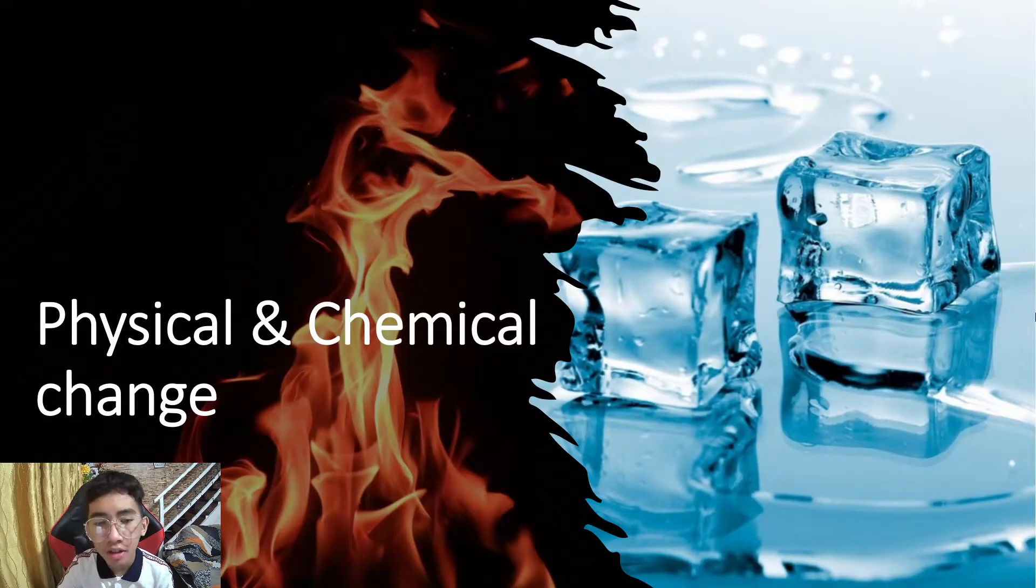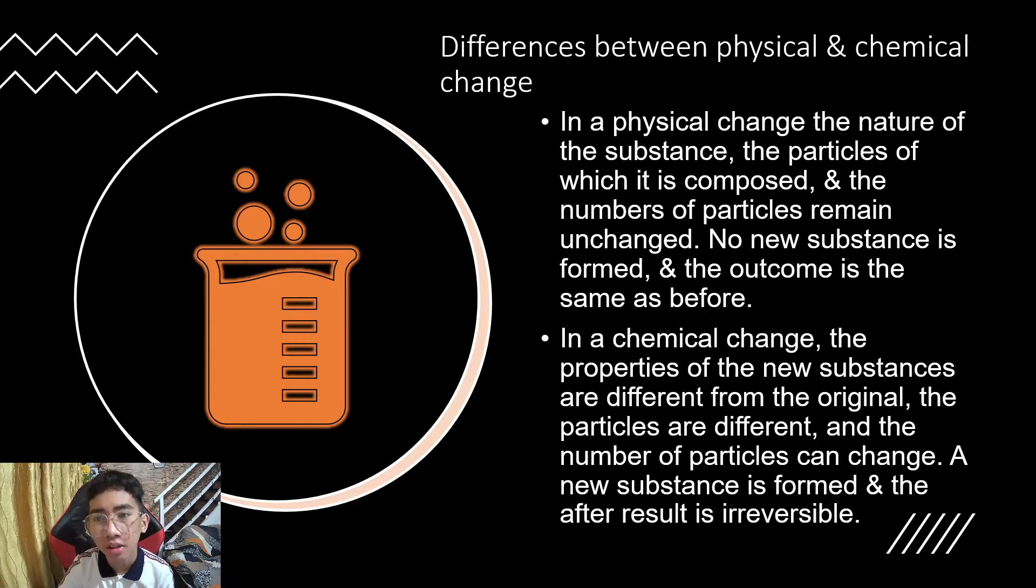Physical and chemical change. The differences between physical and chemical changes are: In a physical change, the nature of the substance, the particles of which it is composed, and the numbers of particles remain unchanged. No new substance is formed and the outcome is the same as before.